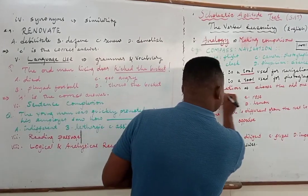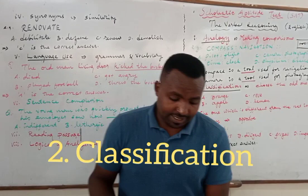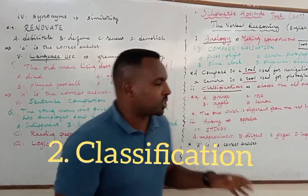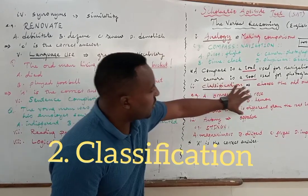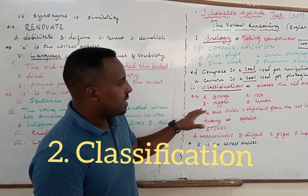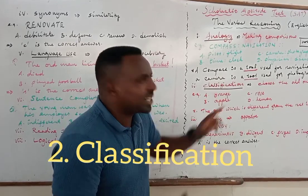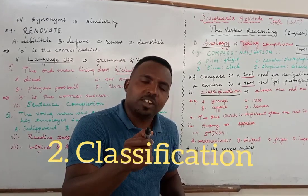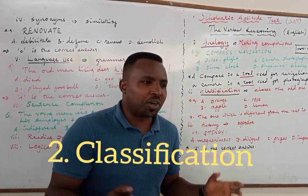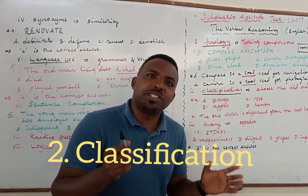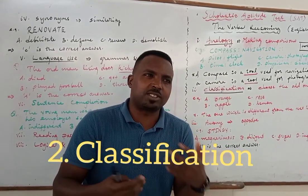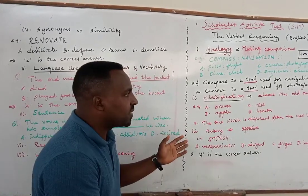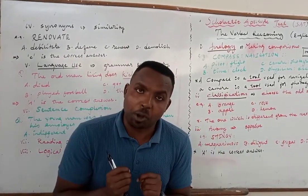Classification, as the name indicates, is all about grouping. A typical instruction in this section says you'll be given four items, out of which one is different. The common instructions are: choose the odd one out, or choose the one which does not belong to the group. You're going to select the one which is different — the rest three have something in common.